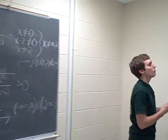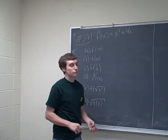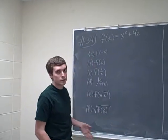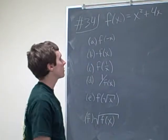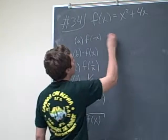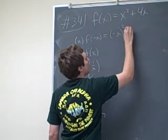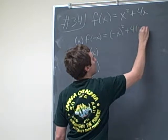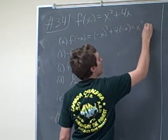We've got one more over here, number 34. They give us a function f of x equals x squared plus 4x. And they ask us to find this laundry list of values here. So for the first one it says f of negative x. So basically all we have to do is plug in negative x. We get negative x squared plus 4 times negative x, which equals x squared minus 4x.